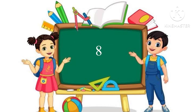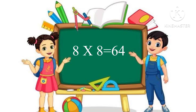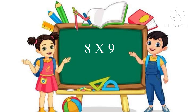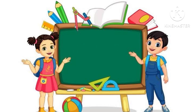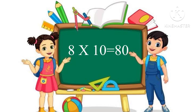8 sevens are 56. 8 eights are 64. 8 nines are 72. 8 tens are 80.